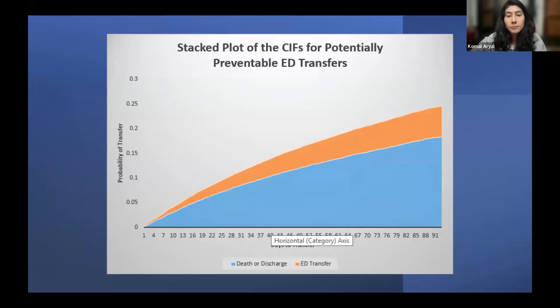From our cohort, approximately 22.7% of residents experienced an ED transfer within the first 92 days of admission. So then I calculated a cumulative incidence function to understand the probability of an ED transfer for both outcomes.